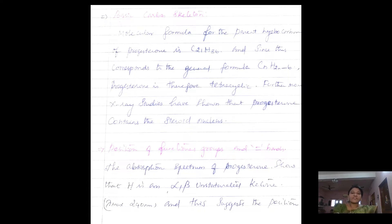Further, the presence of a tetracyclic carbon skeleton, the basic carbon skeleton, is predicted through X-ray analysis. X-ray analysis shows progesterone possesses a steroid-like nucleus in its structure.